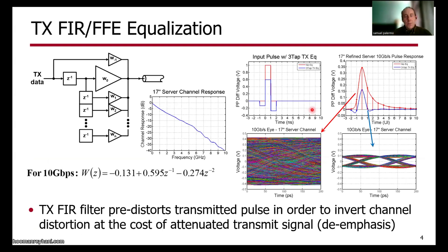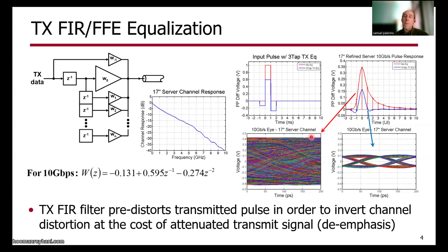Let's take a deep dive into some of these equalization implementations, starting with the basics of transmit-side FIR or feedforward equalization. What we're trying to do is take our single-bit pulse response and pass it through an FIR filter such that at the output of the channel, we get an overall pulse response with much less ISI, allowing us to go from a completely closed eye to one with significant voltage and timing margins. Because we have a limited transmitter output swing and are peak-power limited, we can only achieve this by attenuating the low-frequency content of our signal — something we call de-emphasis.